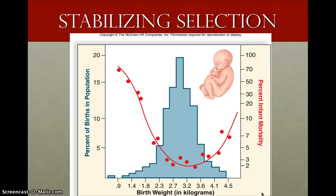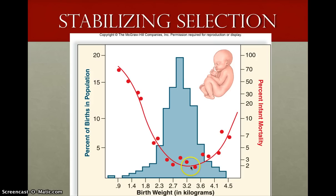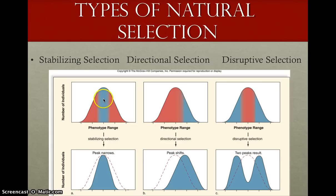Another example of stabilizing selection is human birth weight. This graph shows the percentage of infant mortality versus birth weight. Right around three kilos is the most advantageous — that's when infant mortality is the lowest, which is why most babies are born in that range. Babies born far below that weight are unlikely to survive because they are not fully developed. And babies born very far above that weight create a very difficult childbirth, so they're less likely to survive as well. So in stabilizing selection, we see the peak narrow over time.